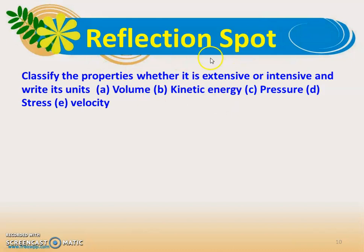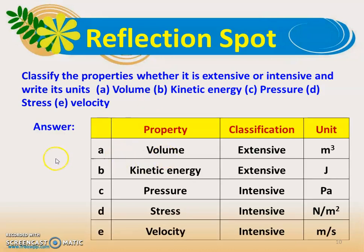We have a few review questions. First, classify the following as extensive or intensive property and write the unit: volume, kinetic energy, pressure, stress, and velocity. Volume is an extensive property (unit: m³). Kinetic energy (½mv²) is an extensive property, as it depends on mass (unit: Joule). Pressure is an intensive property (unit: Pascal or N/m²). Stress is also an intensive property (N/m²). Velocity is an intensive property (m/s).